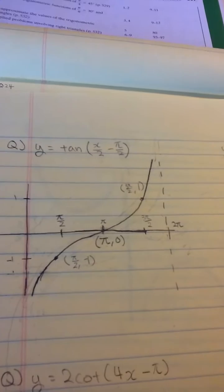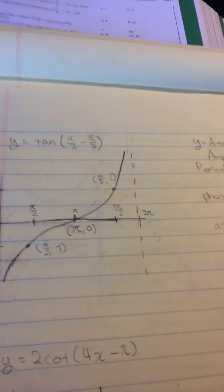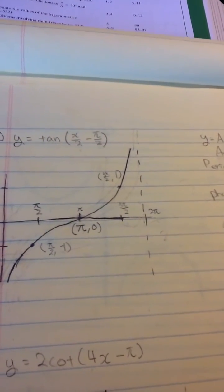I'm going to sketch it and find the points and x-coordinates, and also period, phase shift, and asymptote.